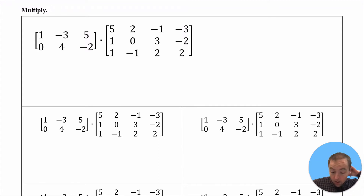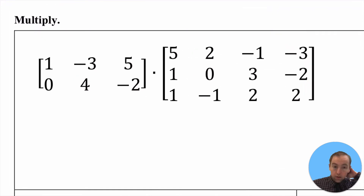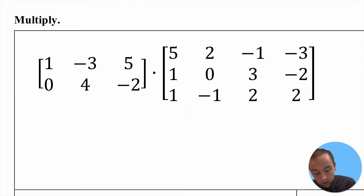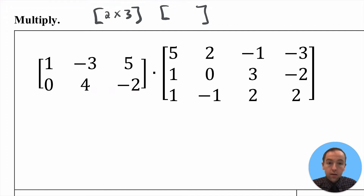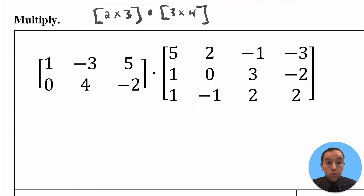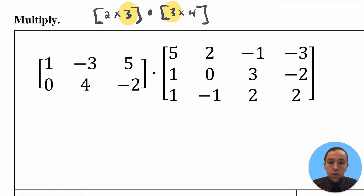When we are trying to multiply matrices, as we see in this particular problem, you can only multiply matrices together when certain conditions hold. So before you actually multiply, it's important that you recognize some aspects of the dimensions. The first matrix here has two rows and three columns, so it's a two-by-three matrix. The second matrix has three rows and four columns. So we're trying to multiply a two-by-three matrix with a three-by-four matrix. You can only multiply two matrices together when those two middle numbers are the same.